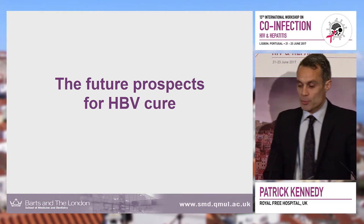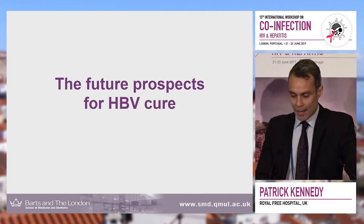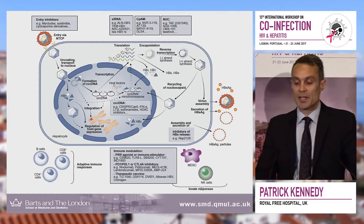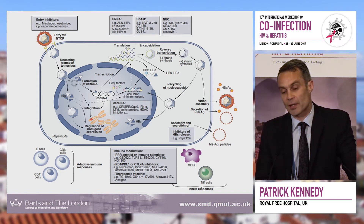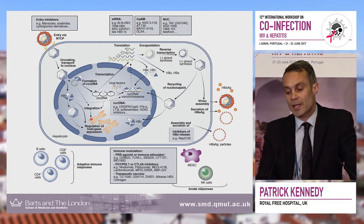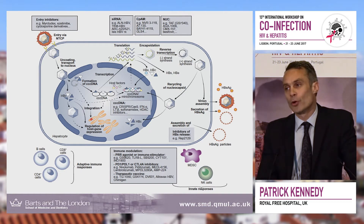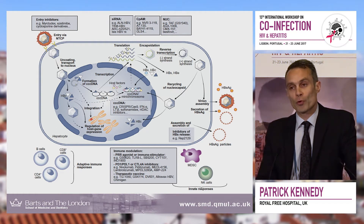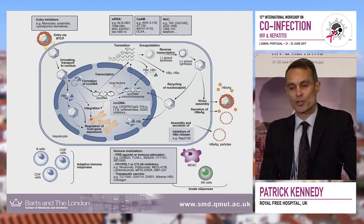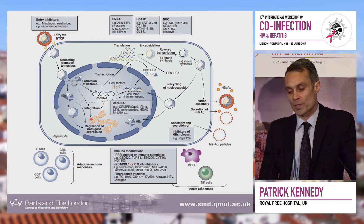So, the future prospects for HBV cure — where are we moving in five to ten years? Going back to the HBV life cycle, I'll highlight some of the targets: starting with entry inhibitors, moving across to siRNAs, capsid inhibitors, and NUCs, then down to inhibitors of surface antigen release, immune modulation, and targets of cccDNA. The goal of all therapies over the longer term will be to eradicate hepatitis B. The cccDNA serves as a reservoir of transcriptional virus, so as long as it exists within the hepatocyte nucleus, there is risk of reactivation and the possibility of disease progression.